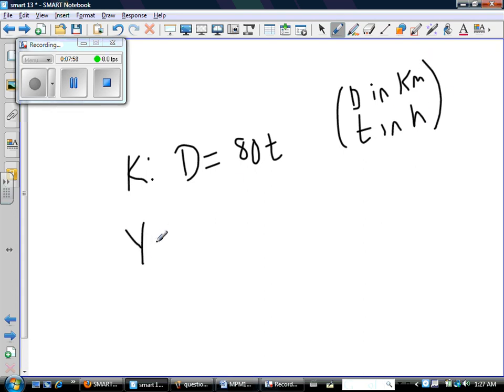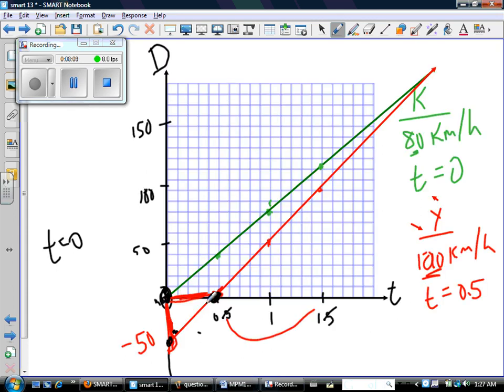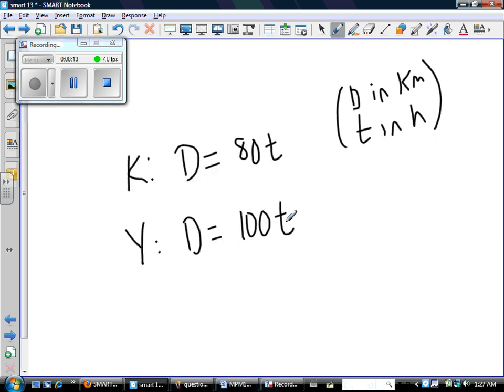So now Yvette. Yvette's distance is dependent upon the time. How many hours has she been moving? For every hour, Yvette goes 100 kilometers. And Yvette starts back here at minus 50. That's how we compensate for the different time starts. So there's Yvette's equation and there's Kenji's equation.